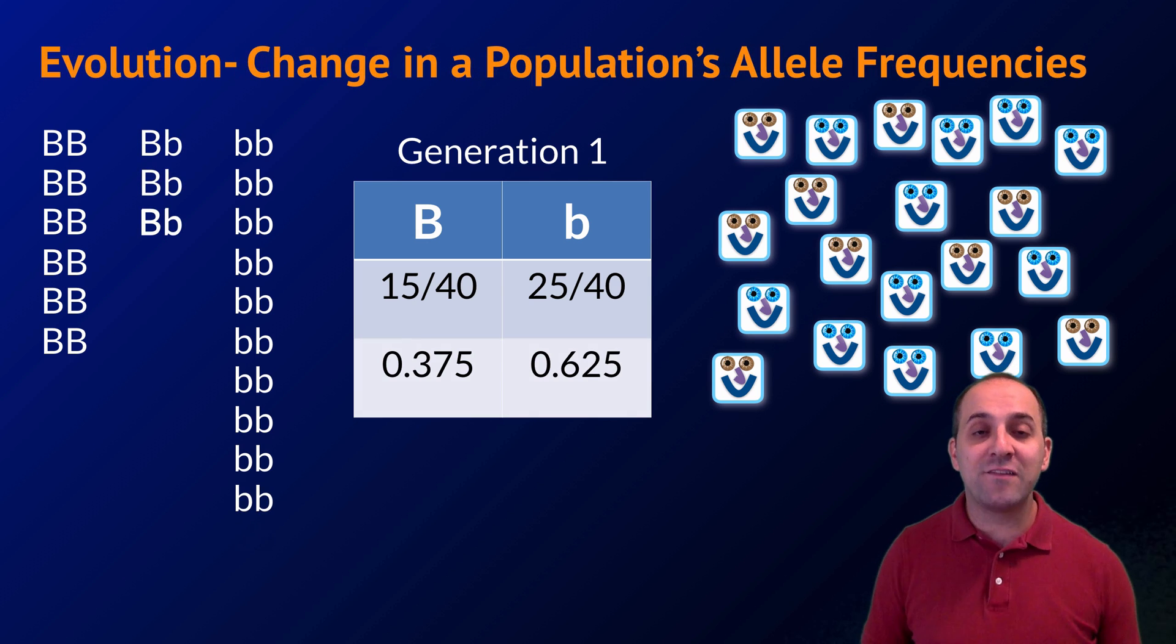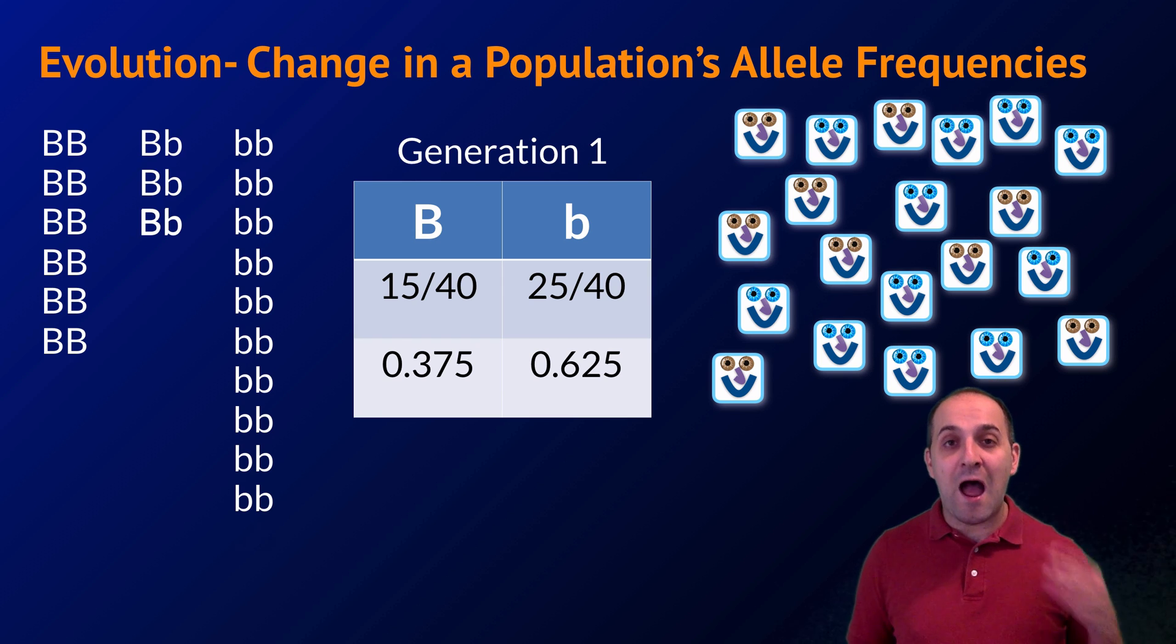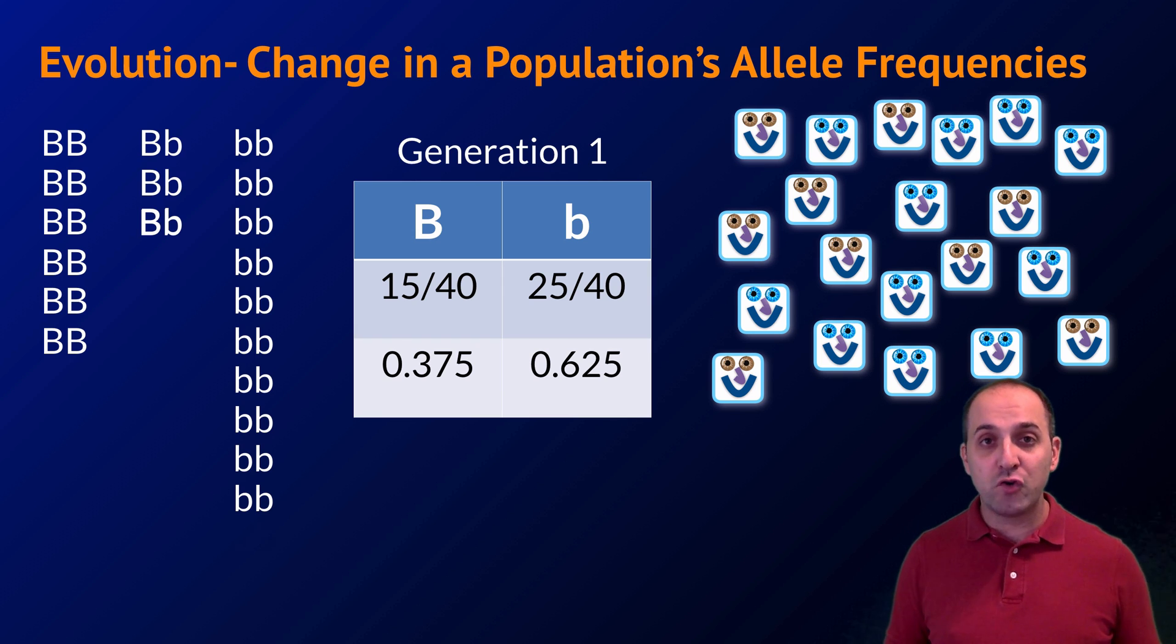Instead of defining evolution as differential reproductive success or survival of the fittest, we can instead define evolution as change in the allele frequencies in a population over time. Now, I'm not saying that any of those previous definitions of evolution do not apply. They absolutely do. All I'm saying is that this is another way of defining evolution that incorporates our modern understandings of genetics, gene pools, and allele frequencies. Let's look at how this works from generation to generation here in our smiley population.